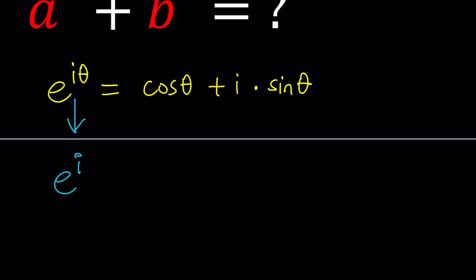How do you go from e to the i theta to e to the i? Easy, by way of substitution. Replace theta with 1. And don't get me wrong, I'm not talking about 1 degree. I'm talking about 1 radian, right? So, because this must be in radians, right?